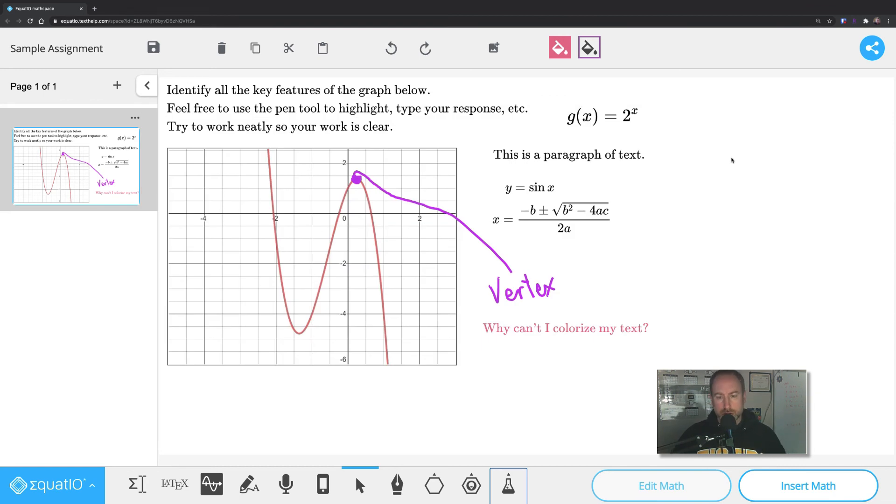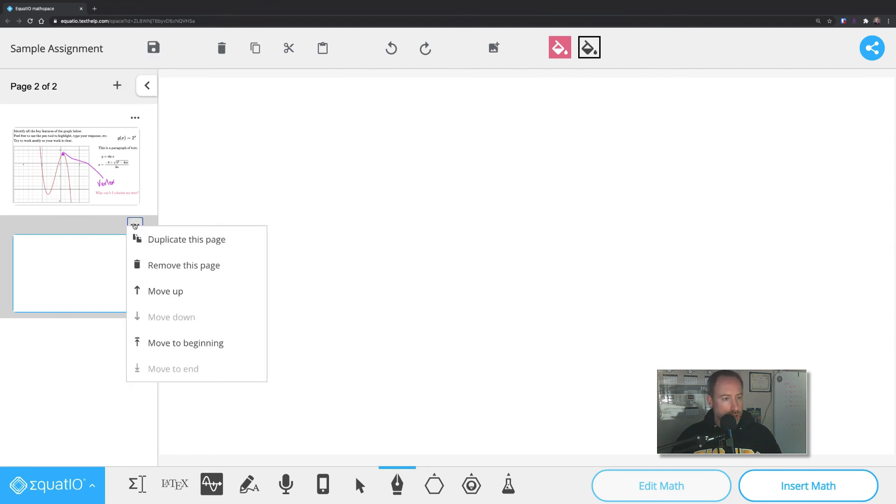So if you get a question like this where it says to identify the key features, you can use your freehand drawing tool. You can use your text insertion. And you can go ahead and draw on this like a canvas. And if you need more room, you can add more canvases. You can delete your canvases. You can reorder them. All of those things as you work through.